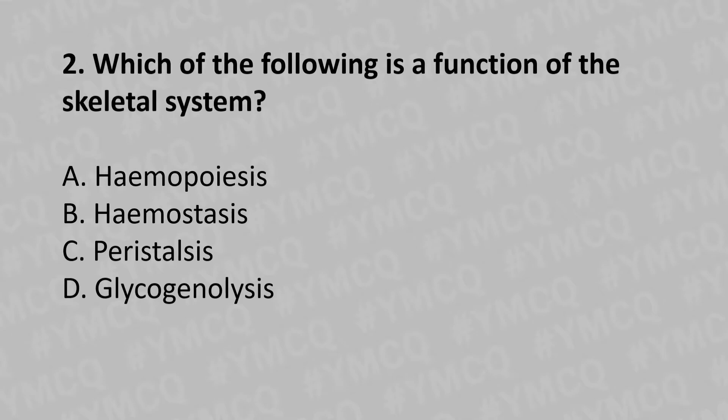Moving to our second question: Which of the following is the function of the skeletal system? Option A: hematopoiesis, Option B: homeostasis, Option C: peristalsis, Option D: glyconeolysis. The answer is Option A: hematopoiesis.